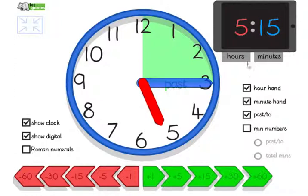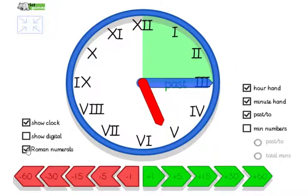I'll just get rid of the digital a minute. You can also see Roman numerals for early Key Stage 2. And that's it. So very handy demonstration tool - you're not fiddling with a little clock in your hand. Have fun!